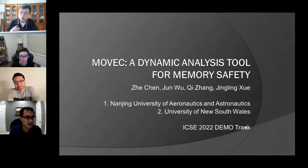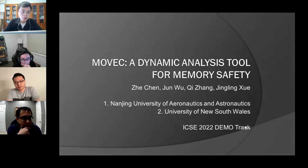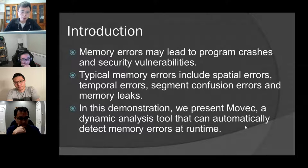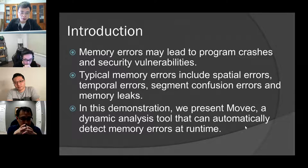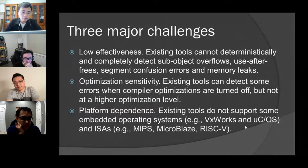Moving on to the second presentation: Hello everyone, I'm Jen Chan from Nanjing University of Aeronautics and Astronautics. I'm going to present Movic, a dynamic analysis tool for the memory safety of C programs. Memory errors may lead to program crashes and security vulnerabilities. Typical memory errors include spatial errors, temporal errors, type confusion errors, and memory leaks — these include buffer overflows and use-after-free.